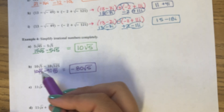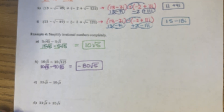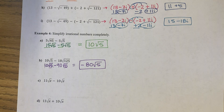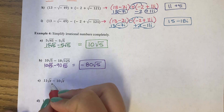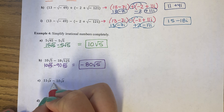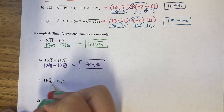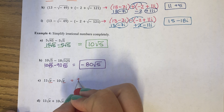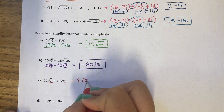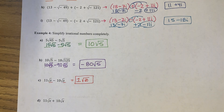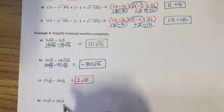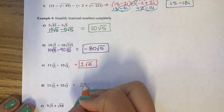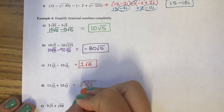We have to have the same number in the root to combine like terms. I have 11 root z minus 10 root z — these already match; they're both root z's. So 11 minus 10 is 1 root z. And for question D, my roots match: 11 plus 10 equals 21 root x's.